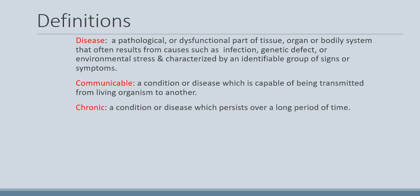These definitions are important because they describe what a disease is and the different types of diseases. Disease is any time there's a pathological or dysfunctional part of tissue, organ, or body system. It's usually caused by an infection, a genetic defect, or environmental stress, and it's usually characterized by an identifiable group of signs or symptoms.